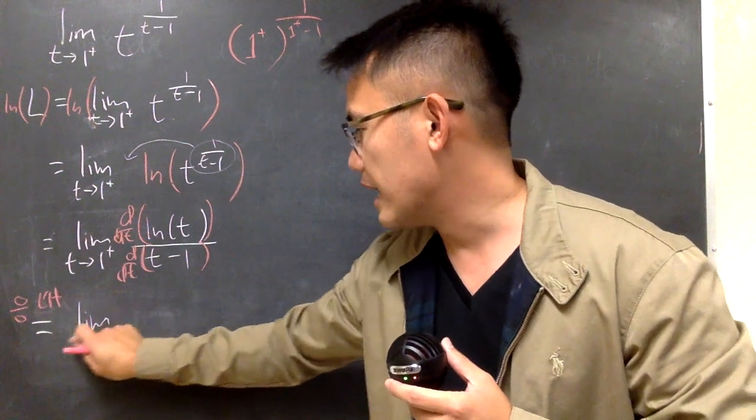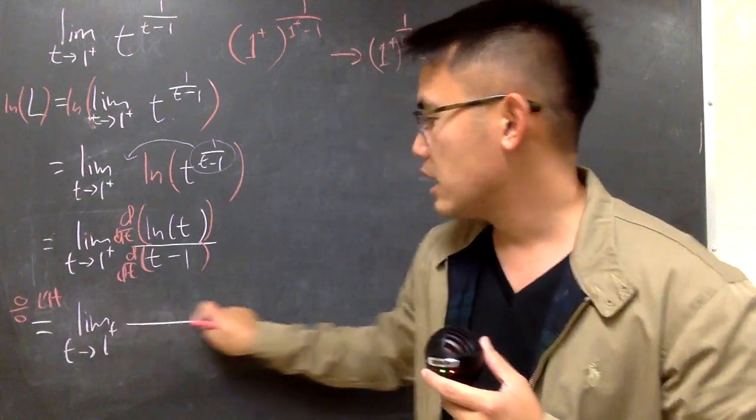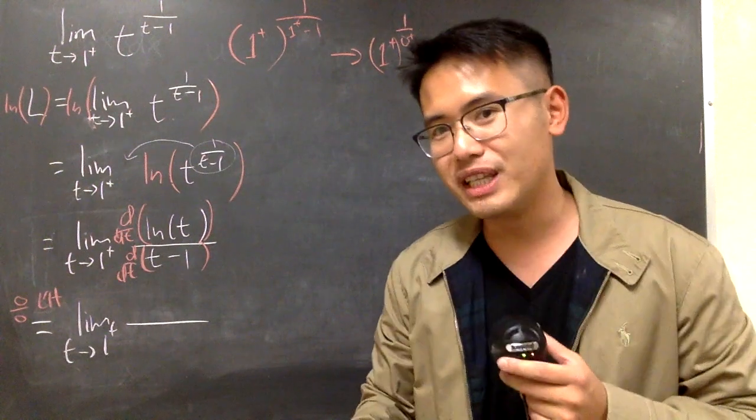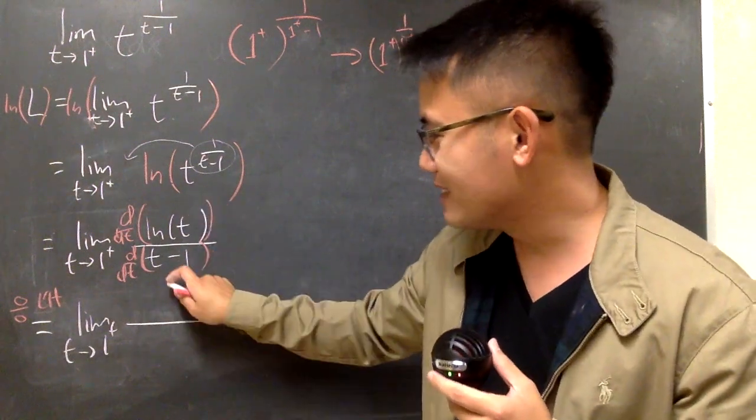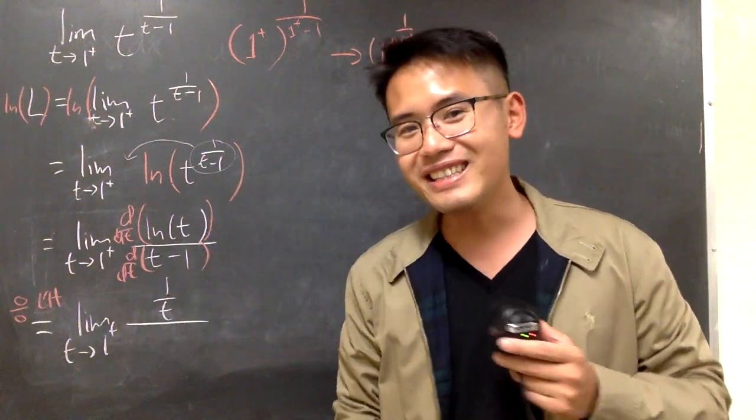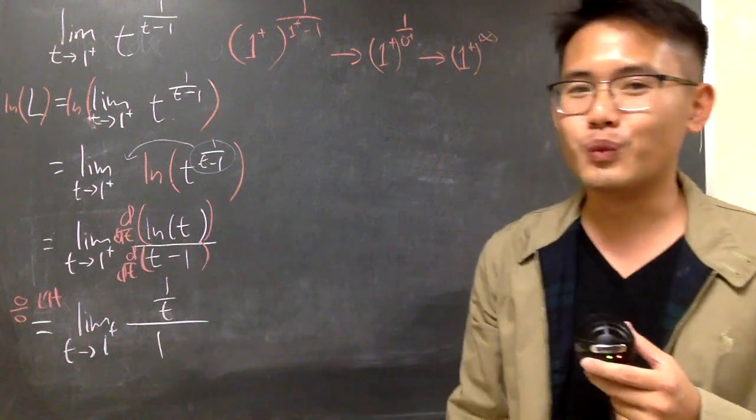So we have the limit as t goes to 1 plus, on the top, derivative of ln of t is 1 over t, and the derivative of t minus 1 is just dt equal to 1.